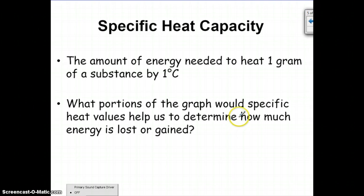Well, hopefully you said the portions of the graph where we have a specific substance, specific state of matter, and that specific state of matter is being heated and the temperature is increasing. The portions where the temperature is increasing are going to be 1, 3, and 5, the diagonal portions of the graph.